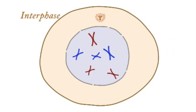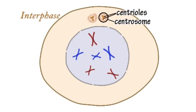Also, during interphase, a structure called the centrosome is duplicated, producing two centrosomes, each of which is made up of a pair of centrioles.